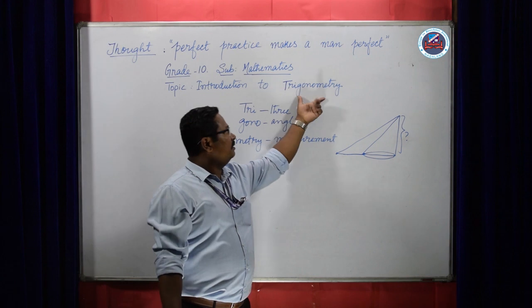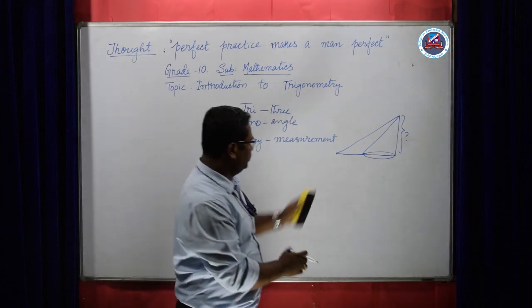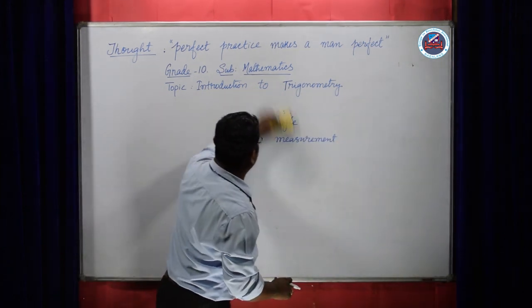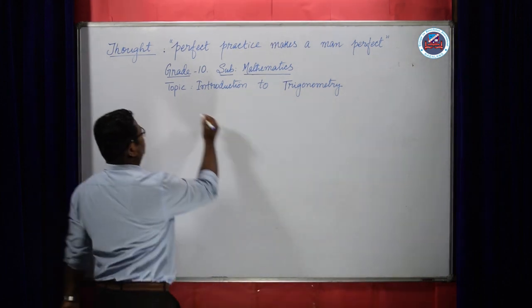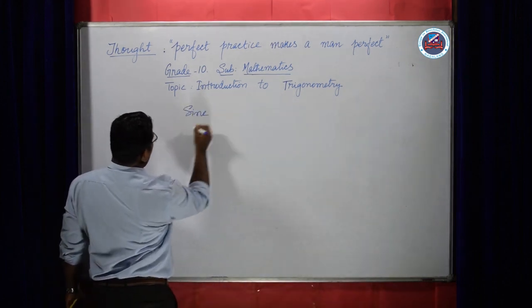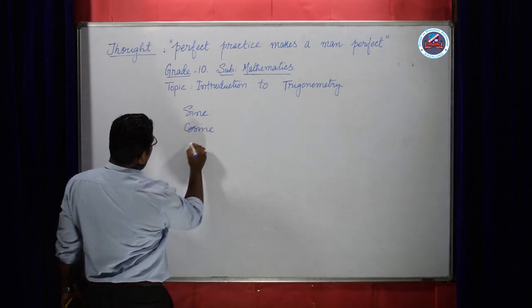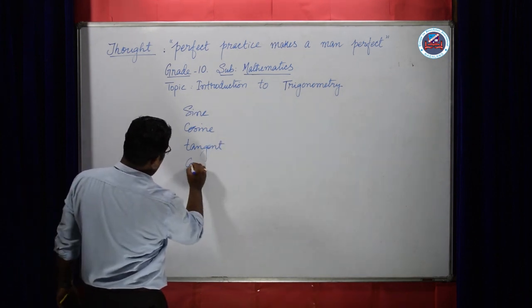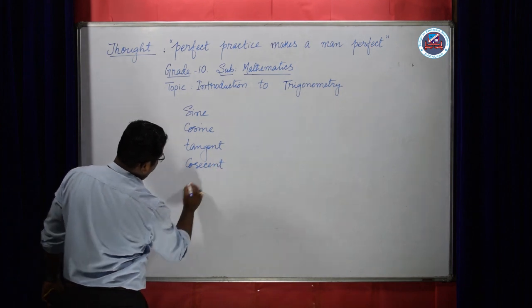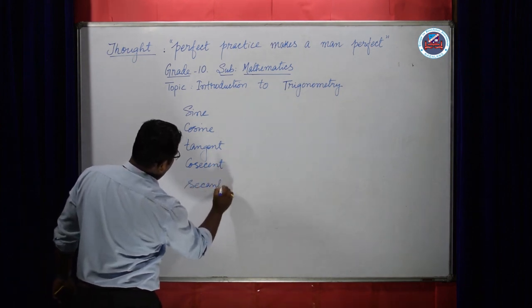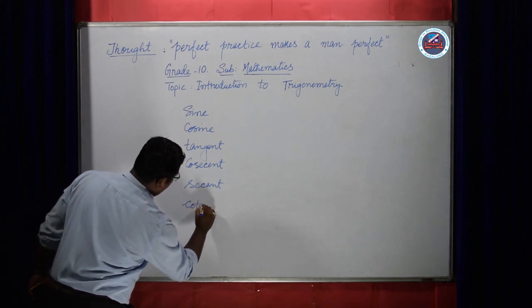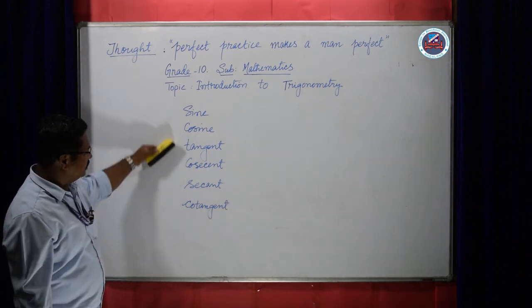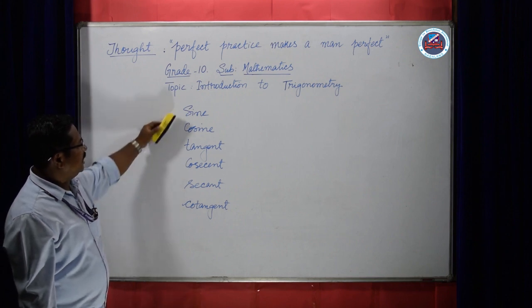To know this trigonometry chapter, you will have to learn the six trigonometric ratios. The six trigonometric ratios are: sine, cosine, tangent, cosecant, secant, and cotangent. These are the six trigonometric ratios you will have to know, but they are abbreviated.